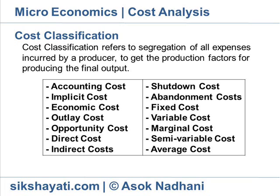Shutdown costs are those which are incurred in the event of temporary cessation of business activities and which could be saved if operations were allowed to be discontinued. Besides fixed costs, shutdown costs cover additional expenditure such as the salary of a security guard looking after the property. Abandonment cost refers to the cost of retiring a fixed asset from use. For example, old office equipment may become useless due to development of new technology. Thus, abandonment cost involves permanent cessation of activity and may lead to the sale of assets.